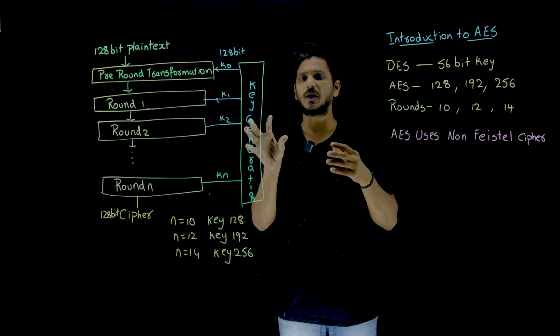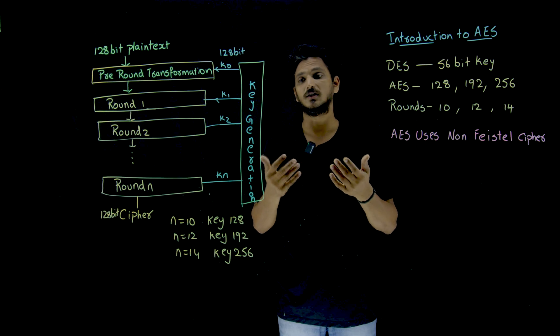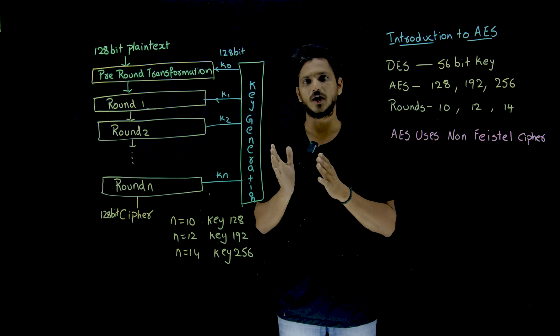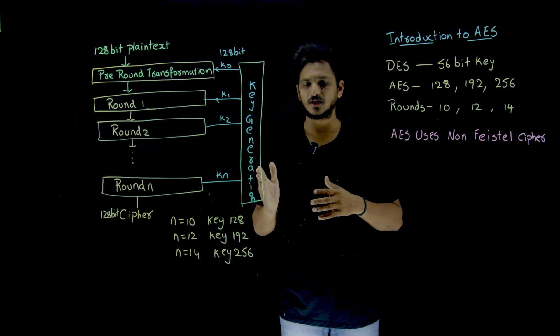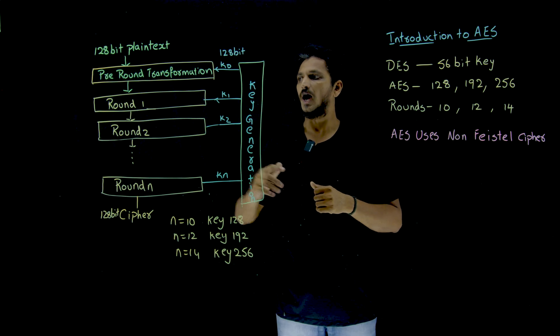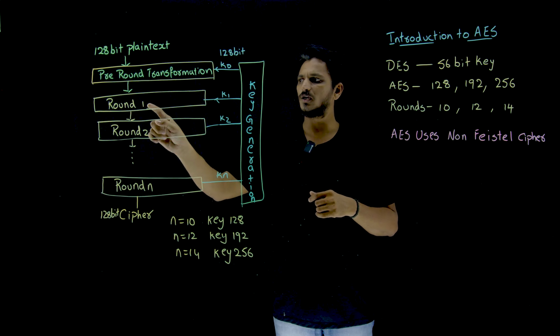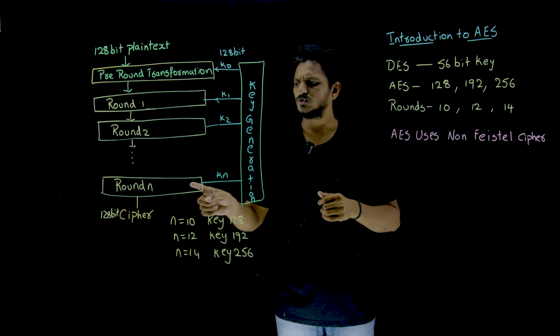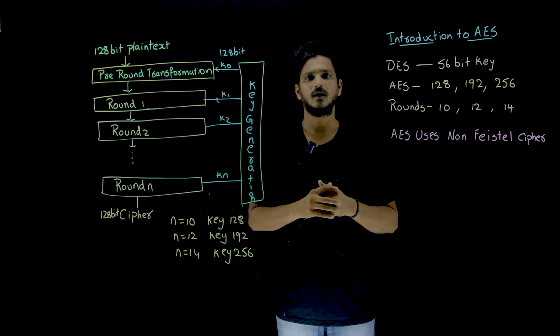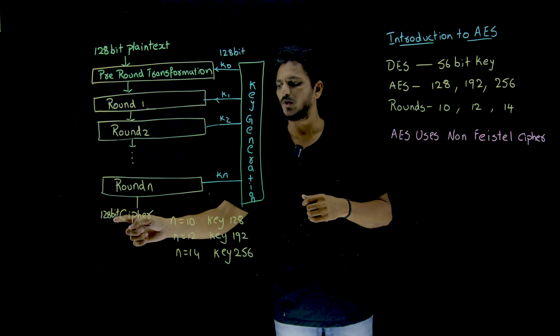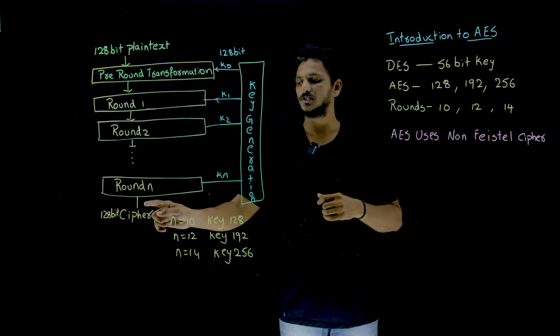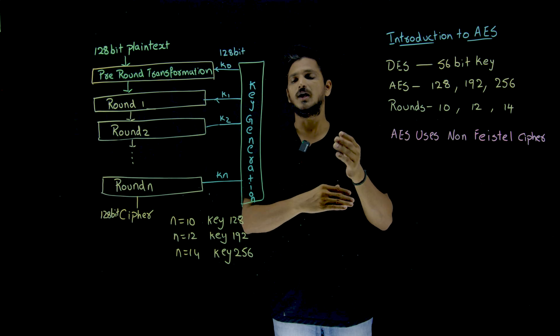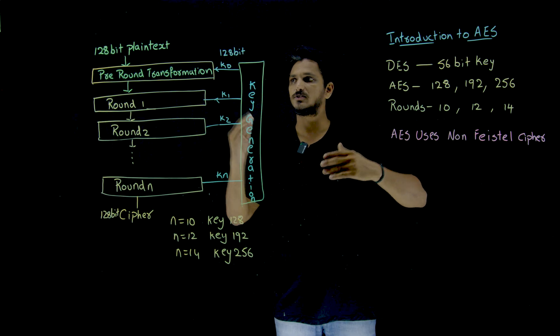Similarly, the same concept applied in DES also. There, we understand what is key generation algorithm, how it will be. Similarly, we are having a new kind of algorithm for key generation in AES. And here, the pre-round transformation, after that, we are having round 1, round 2, so on up to n rounds. So what is this n? From this nth round, we are going to get 128-bit ciphertext. This ciphertext is moved to the destination. There, it will go into the decryption phase, step by step, exactly reverse to the encryption.